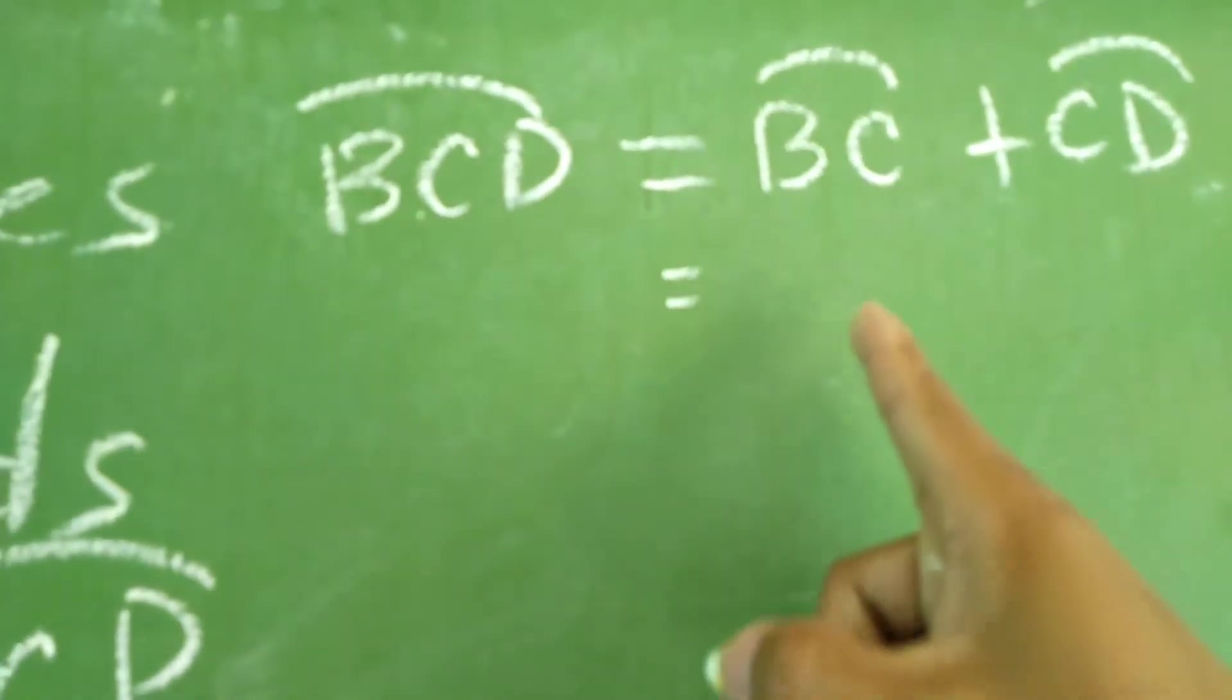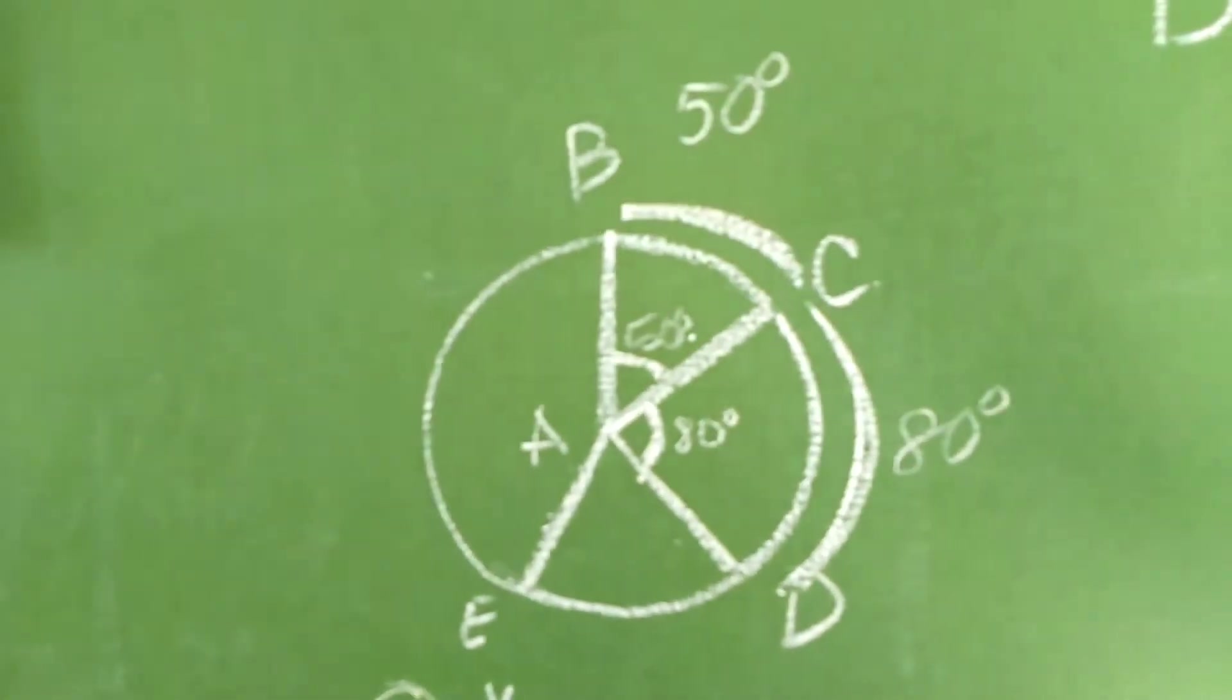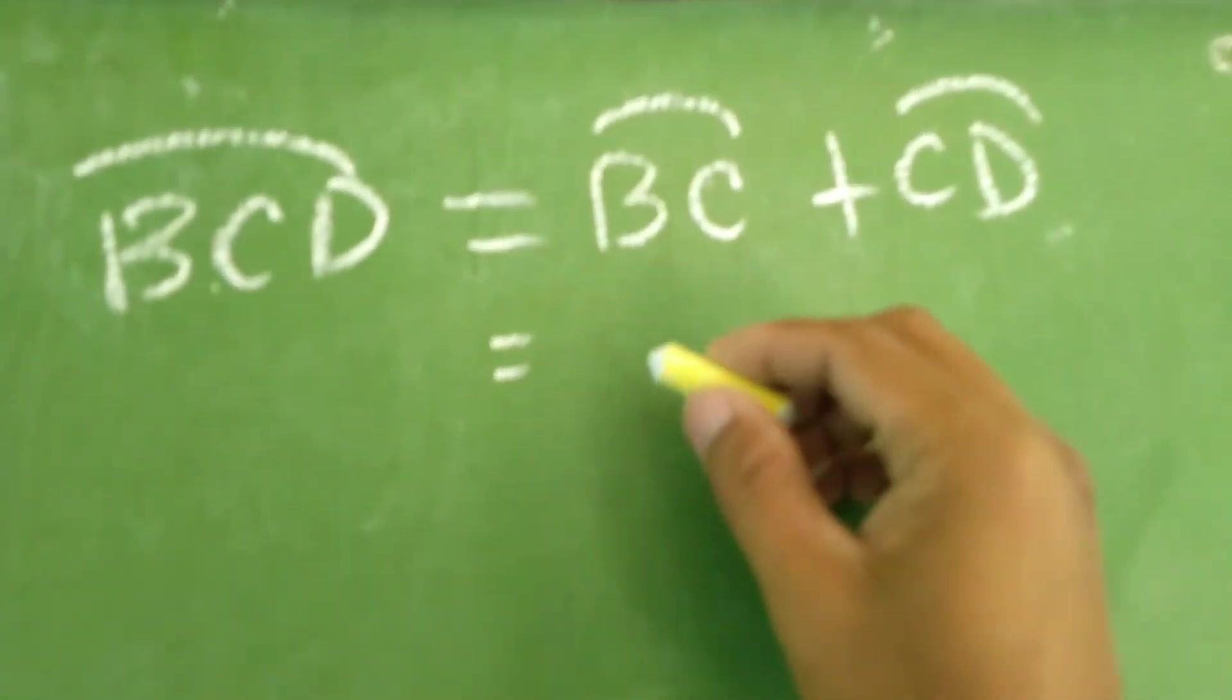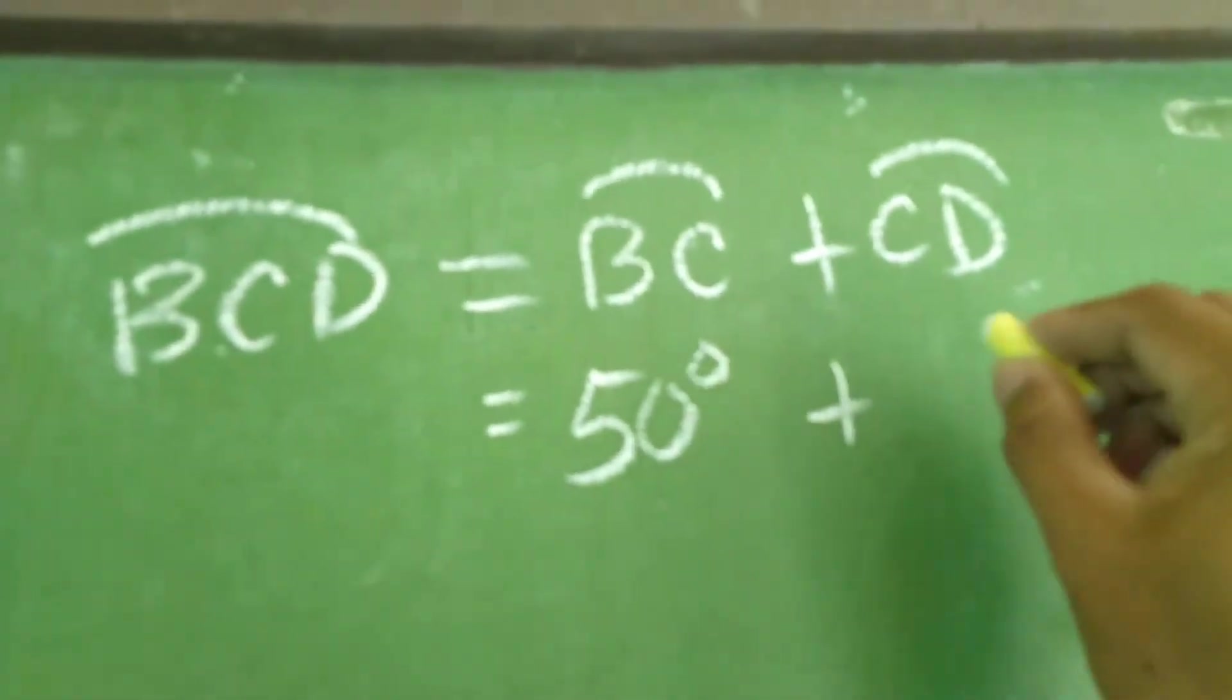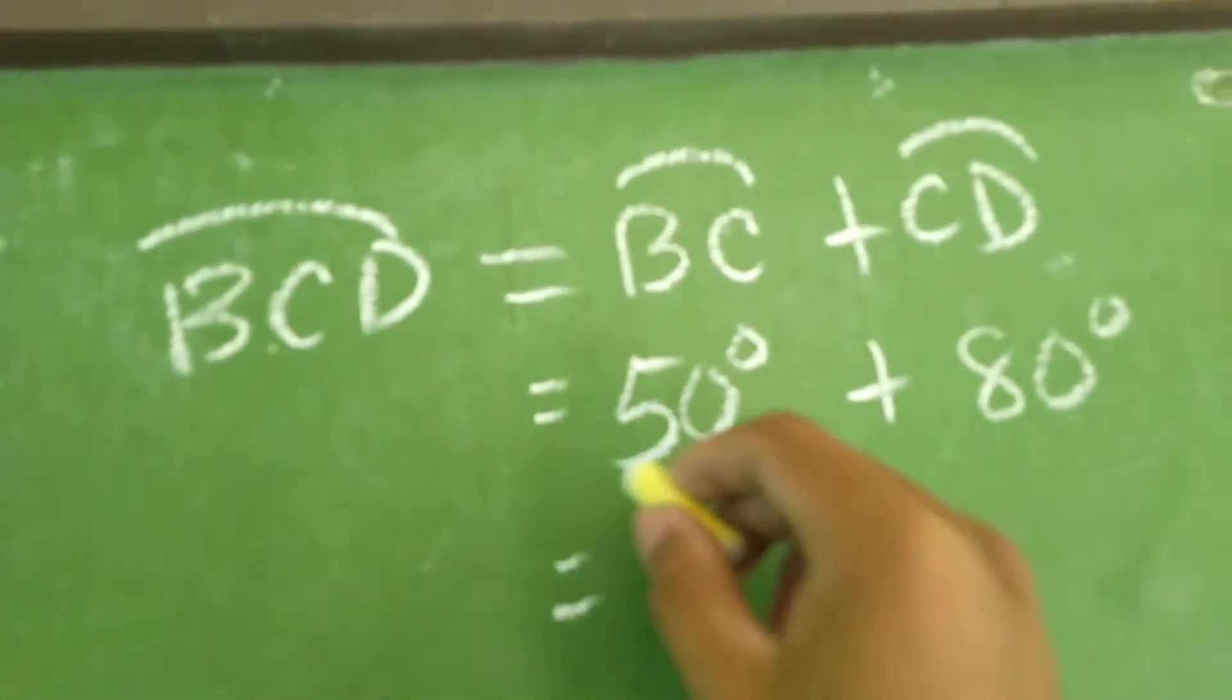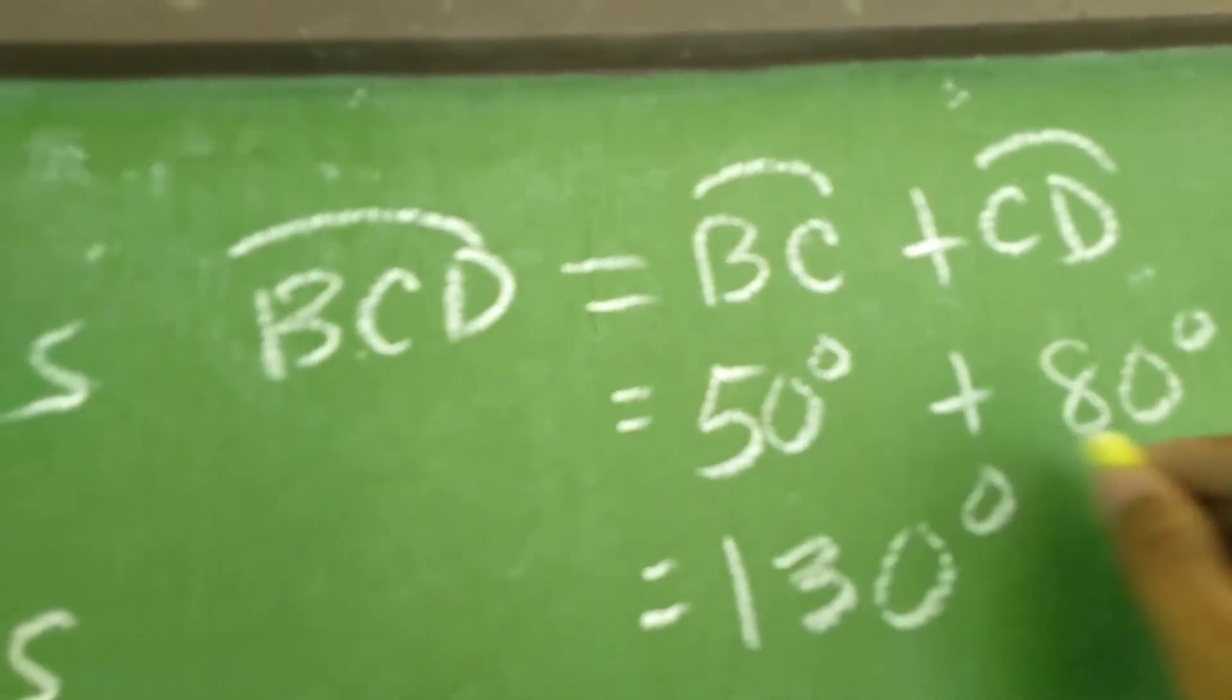Okay? Which is, ano yung B, C natin kanina? Balikan lang natin. B, C is 50. C, D is 80. So, we have, B, C is 50 degrees plus C, D is 80 degrees. Which is equals to 50 plus 80, 130 degrees.